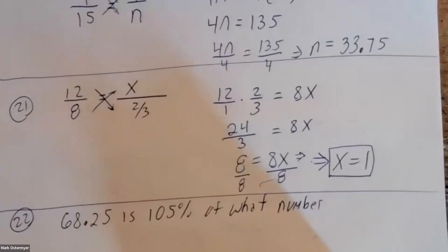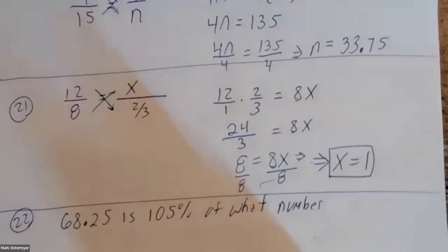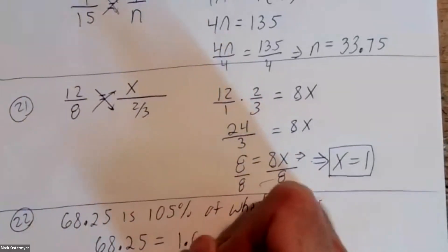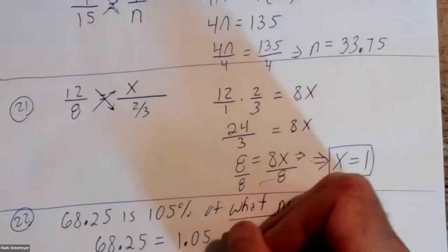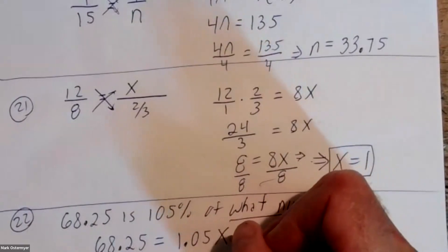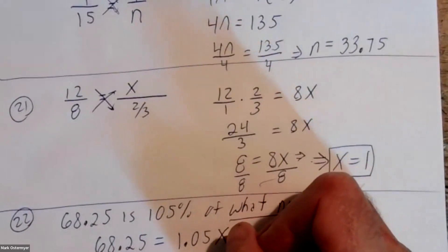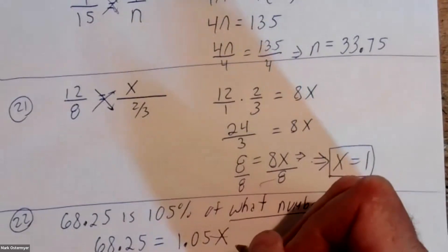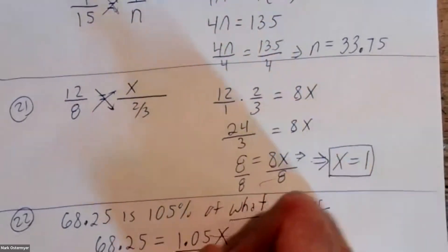Number twenty-two: sixty-eight point twenty-five is one hundred five percent of what number? Set this up as an equation. Of means multiply. So: sixty-eight point twenty-five equals one hundred five percent as a decimal, which is 1.05, times x — what number we don't know, we'll call it x.